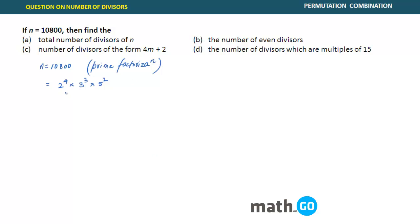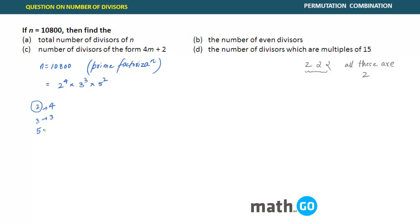The prime factorization of 10800 is 2 raised to the power 4, into 3 cube, into 5 square. Now if you see, all twos are the same — all twos are identical whatever fashion you write them. So now I have a question which says there is a number 2 which is getting repeated four times, there is a number 3 which is getting repeated three times, and there is a number 5 which is getting repeated two times.